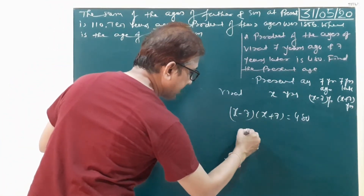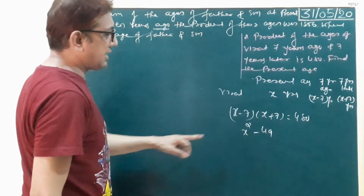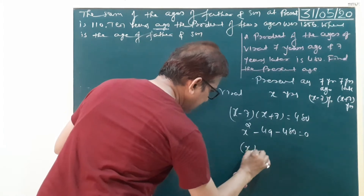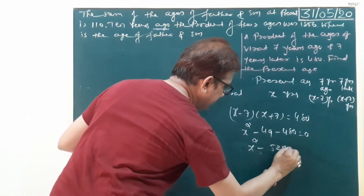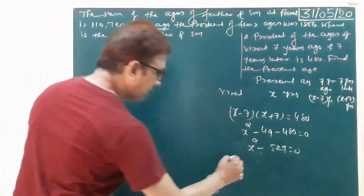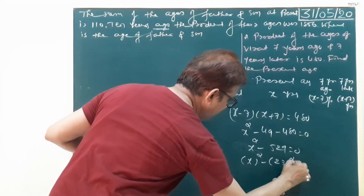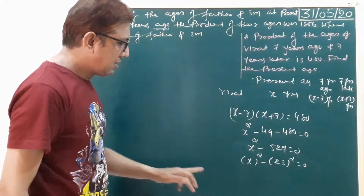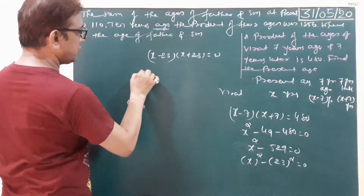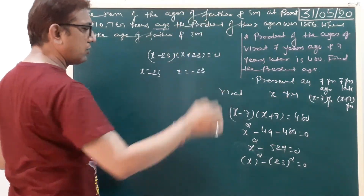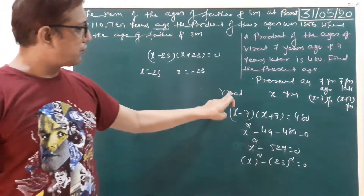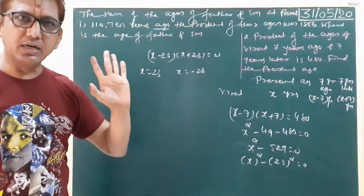Apply the identity A minus B times A plus B equals A squared minus B squared. So X squared minus 7 squared equals 480. Seven squared is 49. So X squared minus 49 equals 480 — moving to one side: X squared equals 529. 480 plus 49 is 529. 529 is the square of 23. So again apply the identity: X minus 23 times X plus 23 equals 0. Therefore X equals 23 and X equals minus 23. Negative number cannot be possible in problem sums, so X equals 23. Virat's present age was 23 years.